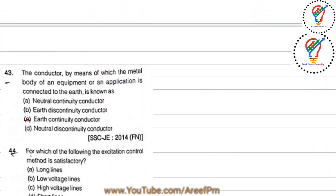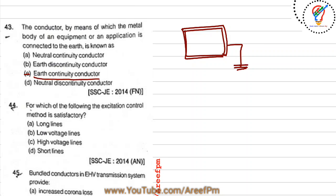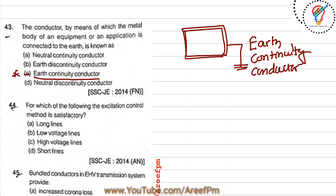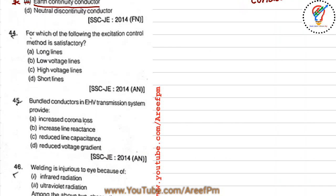Question 43: the conductor by means of which the metal body of equipment or an appliance is connected to earth — this is called an earth continuity conductor. This is an important question.